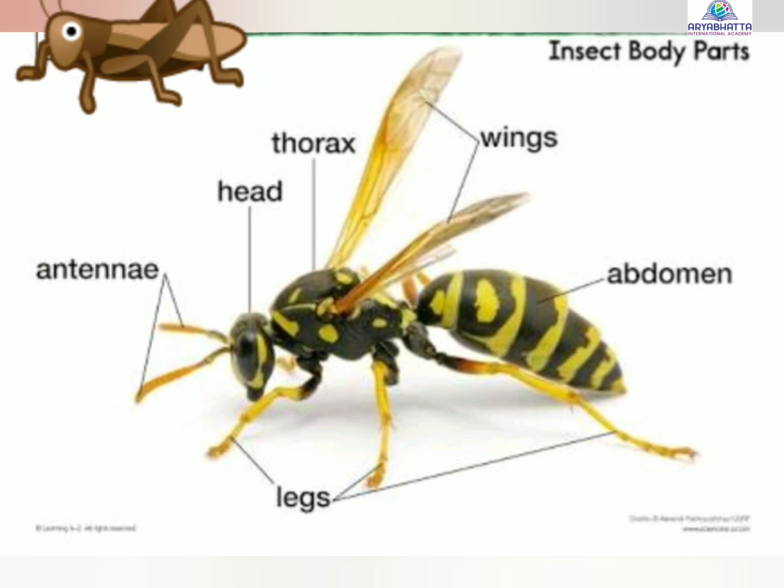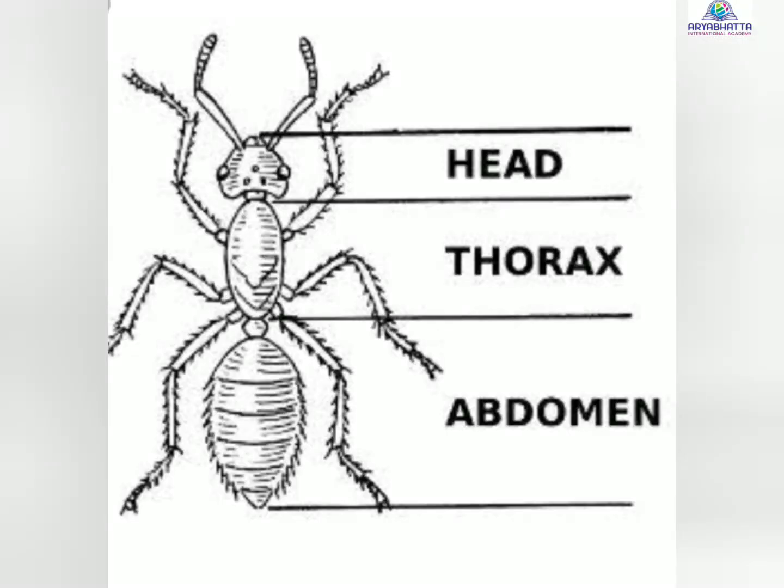Body parts of an insect. Most of the insects have common body parts. The three main body parts of insects are a head, thorax and abdomen.